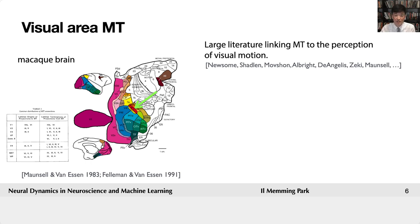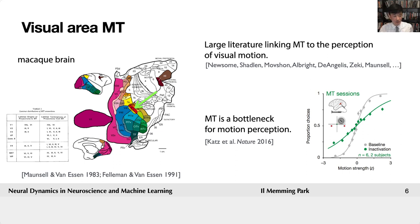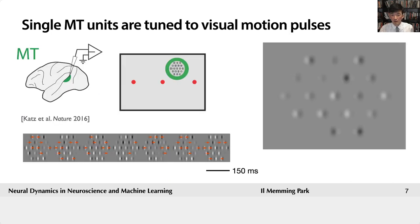A lot of people have studied this area. For example, we know that MT is very involved in motion processing because if you inactivate MT, as shown in this example, the monkeys can no longer see visual motion and they fail to do this simple task of telling which way the visual motion is moving. Traditionally, people have used a random dot motion task to probe MT, but today we're going to talk about a slightly different stimuli.